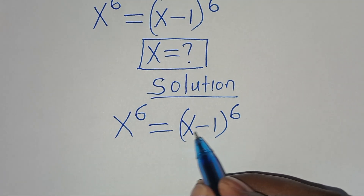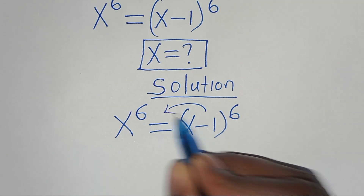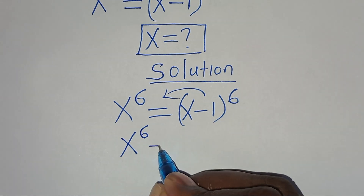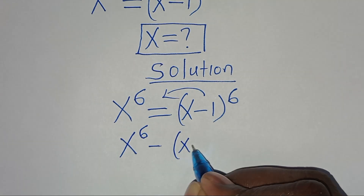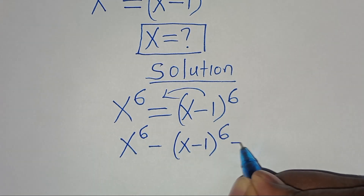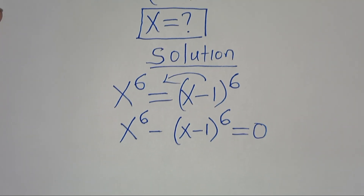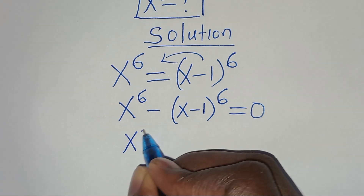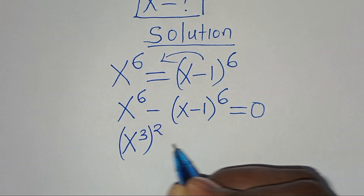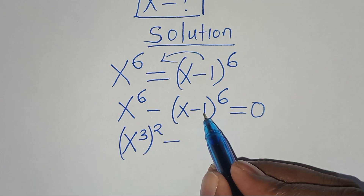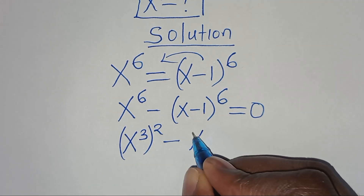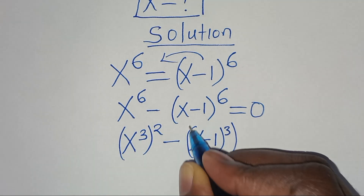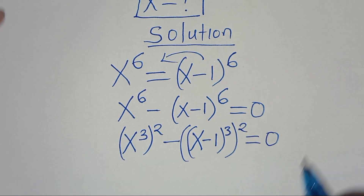The first step is to take x minus 1 to the power of 6 on the left hand side, so that now we have x to the power of 6 subtract x minus 1 to the power of 6, this is equal to 0. We can express x to the power of 6 as x to the power of 3, then raise to the power of 2, then subtract x minus 1 to the power of 6, which you can express as x minus 1, raise to the power of 3, then raise to the power of 2, this is equal to 0.